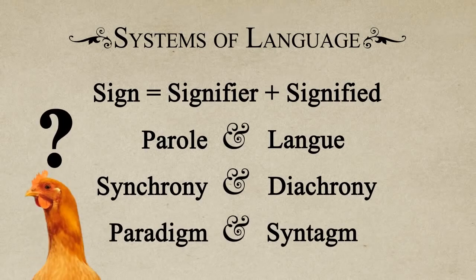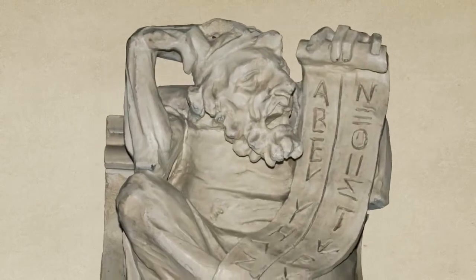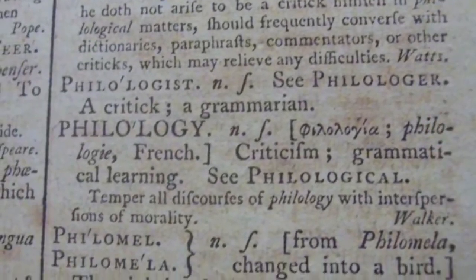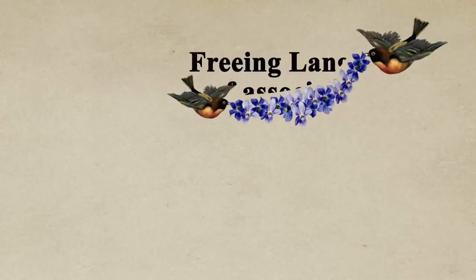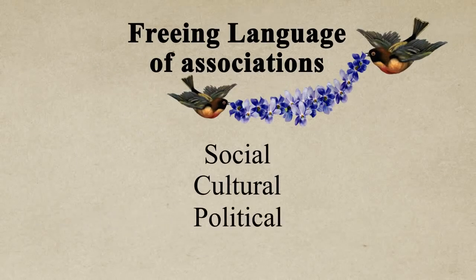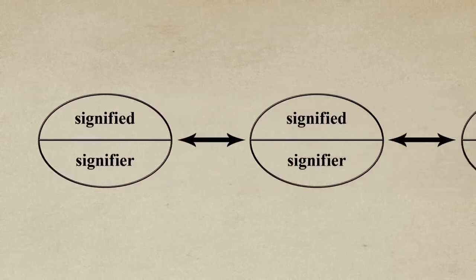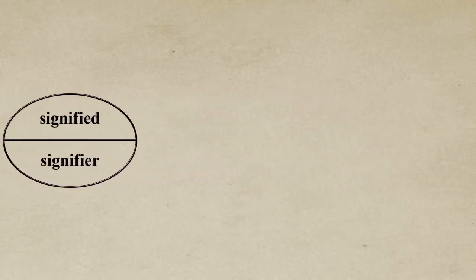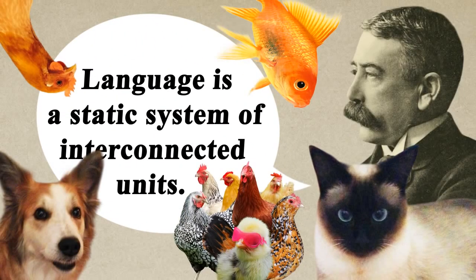So why is any of this interesting? Well, until Saussure started forming his ideas about language, the study of language was laden with belief. Saussure stressed that language was structural, thereby freeing it from associations, be they social, cultural, political, or historical. Practically, this approach to language means that it is studied based on structural relations alone. A linguistic object's meaning is understood through its contrast with other linguistic objects in the system. Language is therefore a static system of these interconnected linguistic objects.